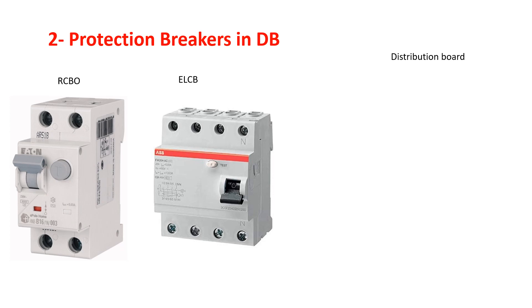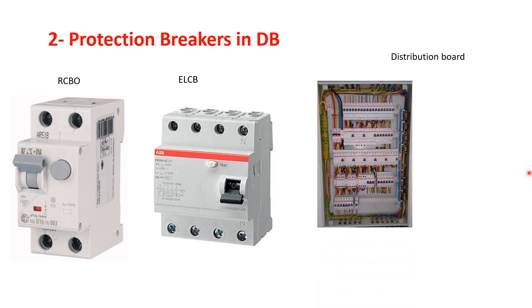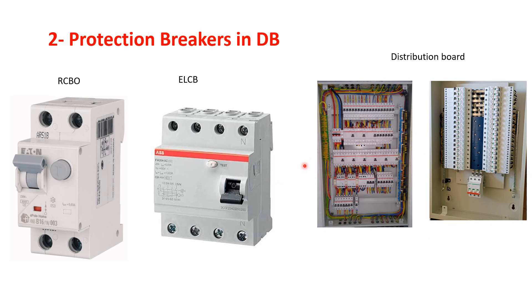The second thing we need is protection breakers inside the distribution board — such as RCBOs and ELCBs. During a fault, if any leakage current flows, the breaker will immediately trip. You don't need to go to the distribution board and manually turn off the power supply — any leakage current in the circuit will cause it to trip automatically. So the second most important thing is protection breakers inside your DB.